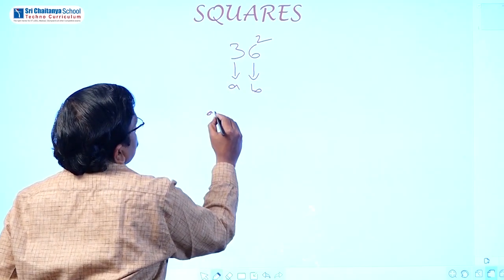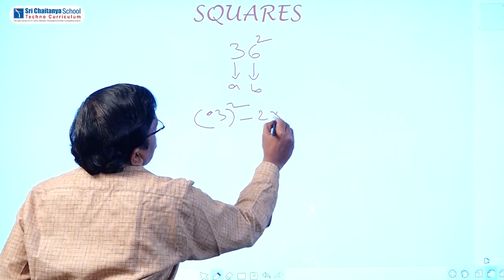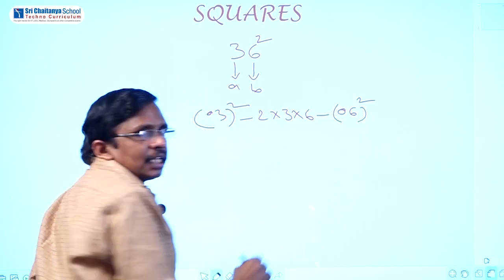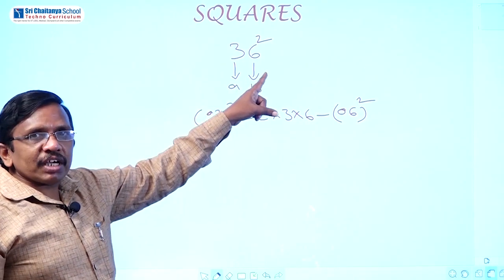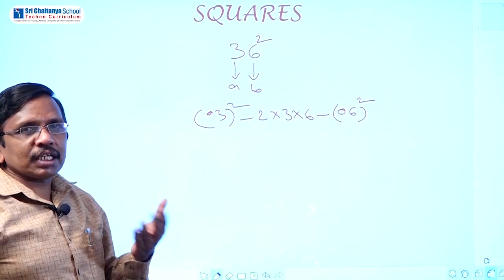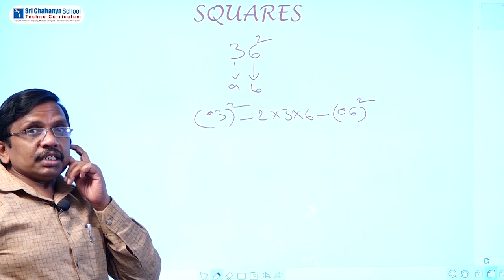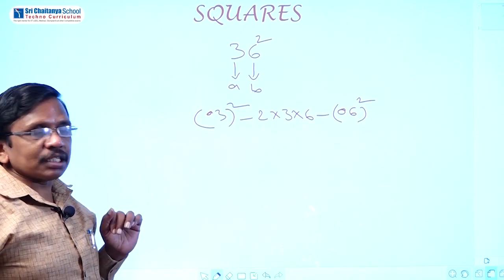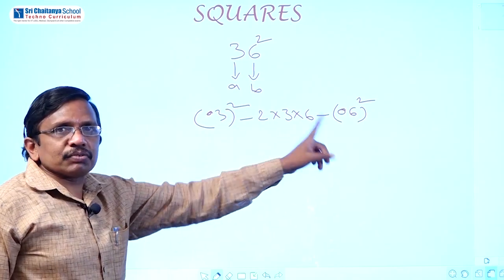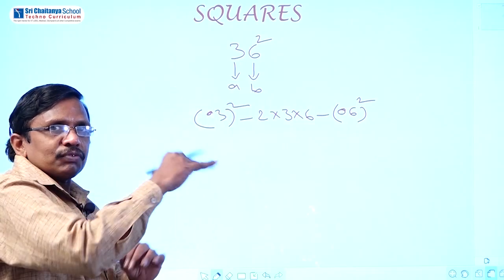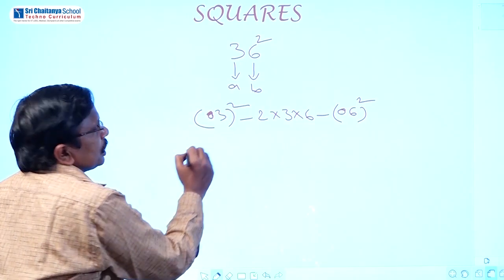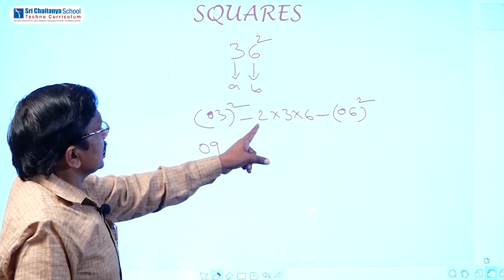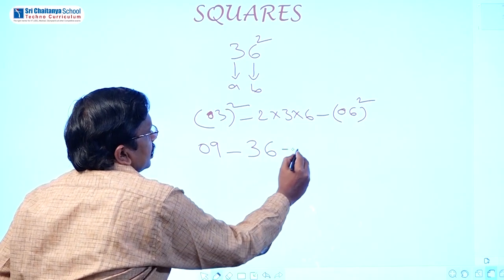So A square means 3 squared, written as 09. Again, this hyphen is not a minus. Then 2AB means 2 into 3 into 6 equals 36. And B square means 6 times 6 equals 36.